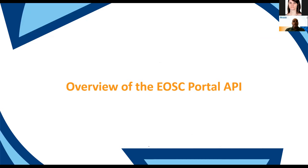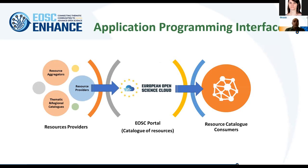Now I will give an overview of the EOSC portal APIs, the third functionality offered to providers. The APIs offer functionality for provider users to update information in the catalog. For instance, aggregators, thematic and regional catalog resource providers can programmatically manage all this information available in the marketplace. The APIs also offer functionality to resource catalog consumers who would like to build added-value services on top of this information by retrieving data from the APIs.